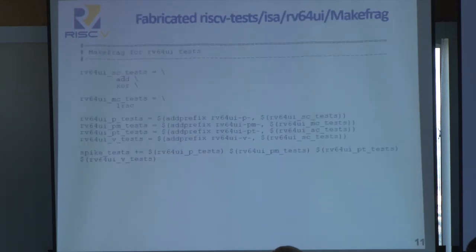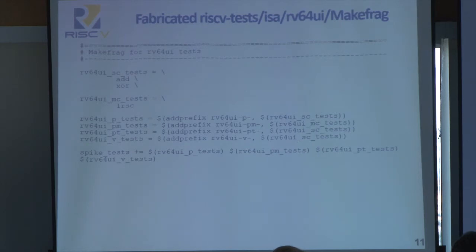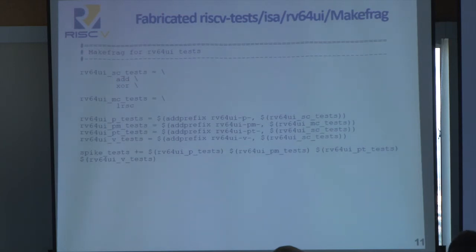And then finally, modify the makefrag inside of that directory to incorporate your test. A simplified makefrag is shown here for RV64UI. If you wish to add a single core test, whereas you're only running on core zero, you would add it to the first list. And if you wish to add a multi-core test, you'll add it to the second list. This will ensure that the rest of the build scripts properly build and then later execute your tests. Notice further down the specialness of the PM test environment, in that only multi-core tests are compiled under the PM test environment, whereas only single core tests are used for the physical, physical timer interrupts, and virtual tests.